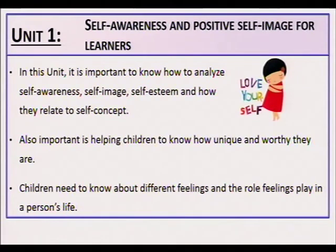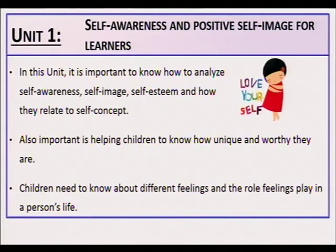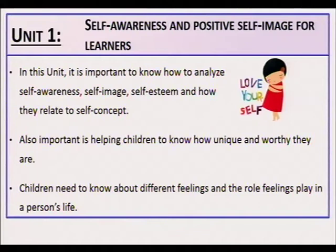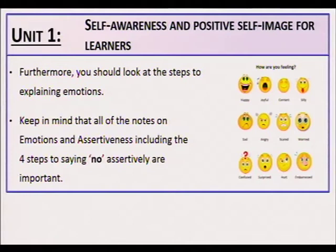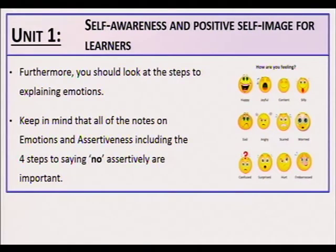Unit 1: Self-awareness and positive self-image for learners. In this unit it is important to know how to analyze self-awareness, self-image, self-esteem and how they relate to self-concept. Also important is helping children know how unique and worthy they are. Children need to know about different feelings and the role feelings play in a person's life, the steps to explaining emotions, and assertiveness — including the four steps to saying no assertively.